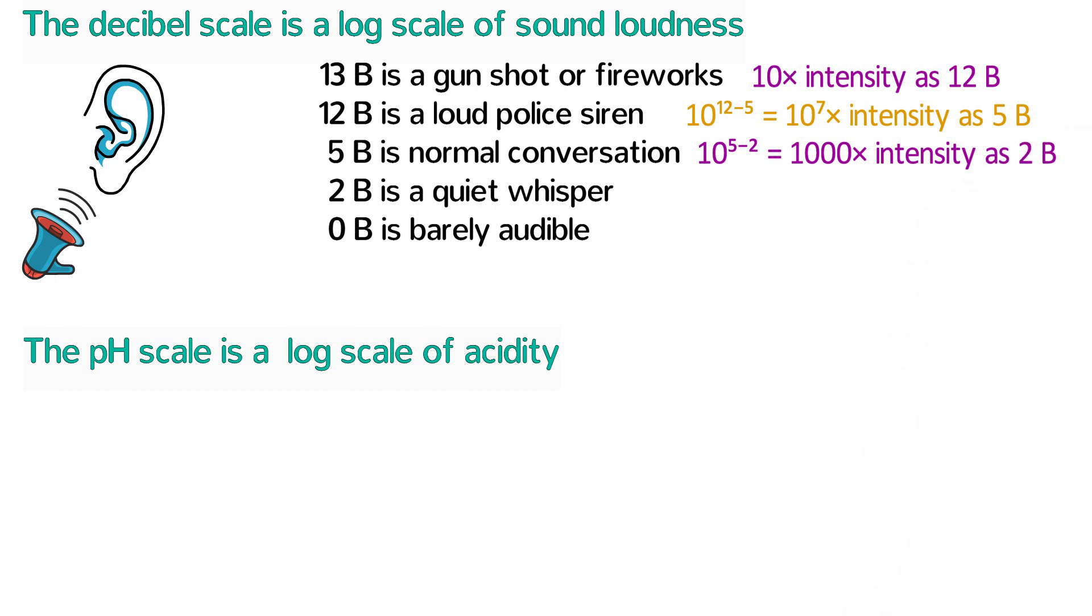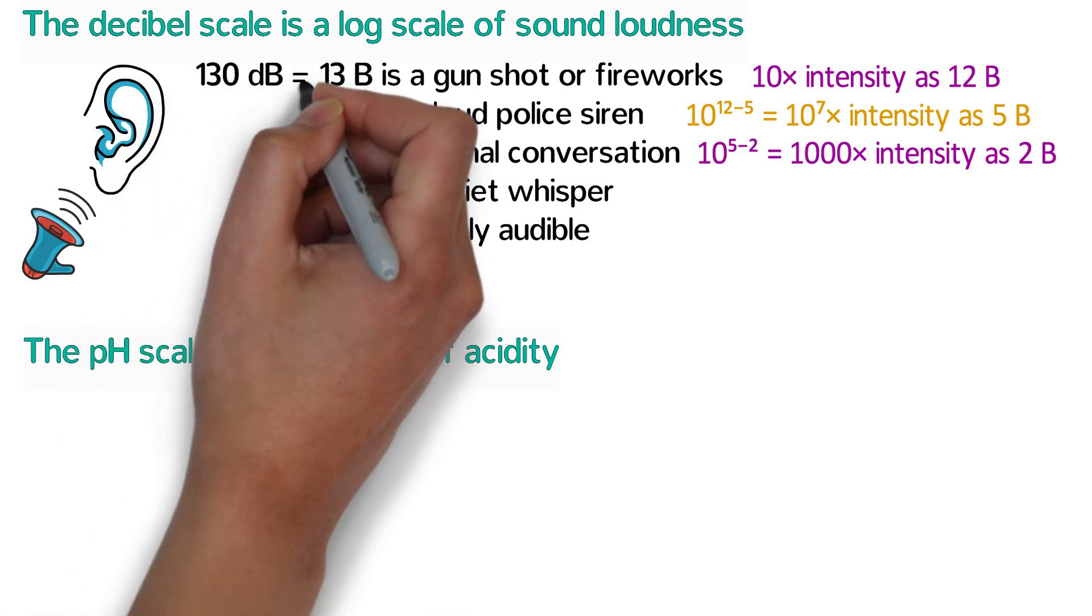All this time we've been talking about the bell scale, but what about the decibel scale? Well, that's simple. A decibel is a tenth of a bell, so thirteen bells is a hundred and thirty decibels.